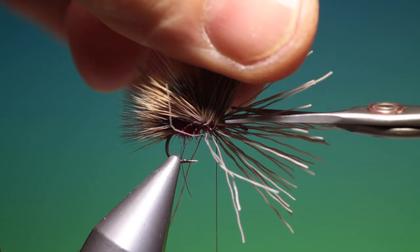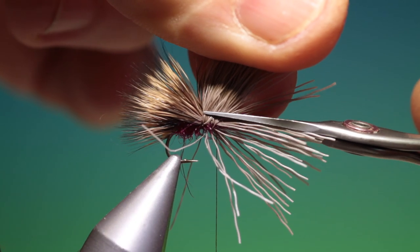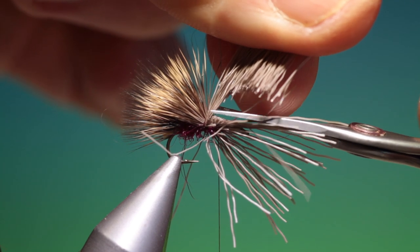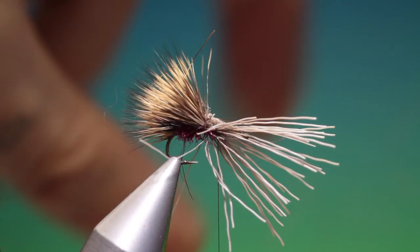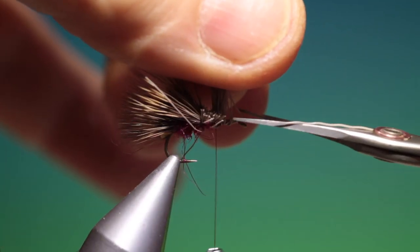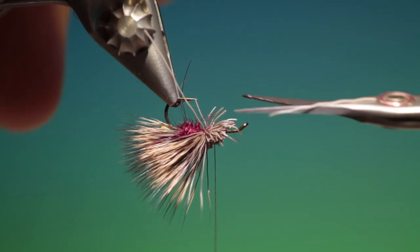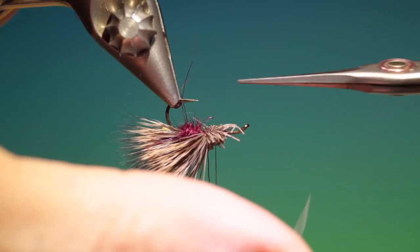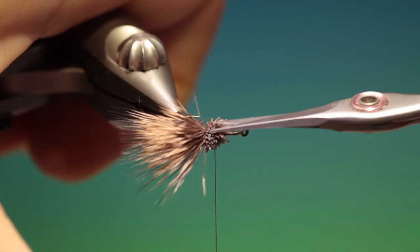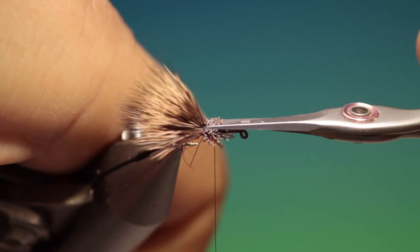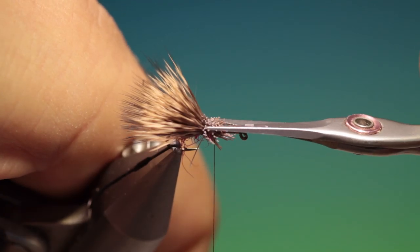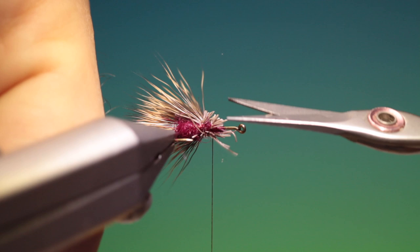Pull everything up again. You don't want to cut the wing of course. Get rid of that. Pull everything up. Trim off the butt ends. So there's not too much there.